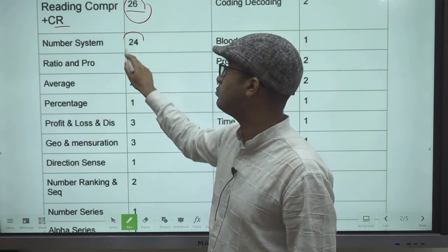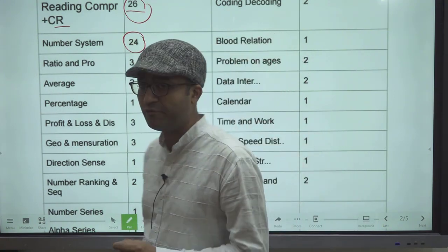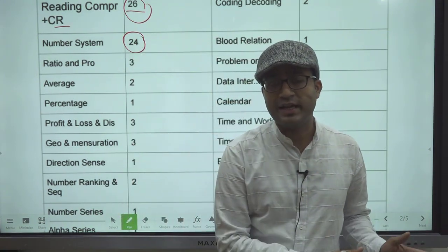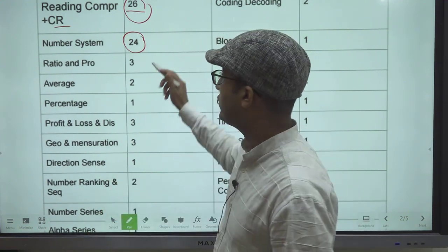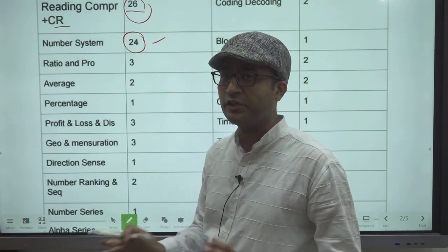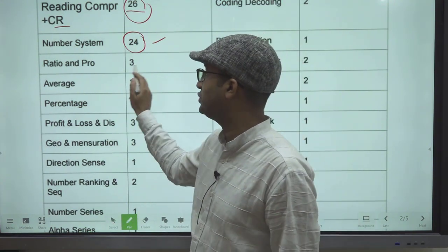Number System chapter had 24 questions. Even in 2019, they asked a good number of questions from Number System. So we anticipate around 15 to 20 questions from Number System next year also.